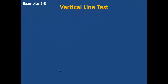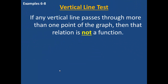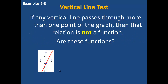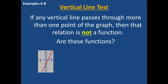Our next new topic is the vertical line test. If any vertical line passes through more than one point of a graph, then that relation is not a function. We're going to look at several graphs and determine whether they are functions. In the first example, the graph is represented by a red line. Using the vertical line test, I determine if a vertical line drawn anywhere would cross the red graph more than once. As you can see, each vertical line crosses the graph only once, so yes, this is a function.